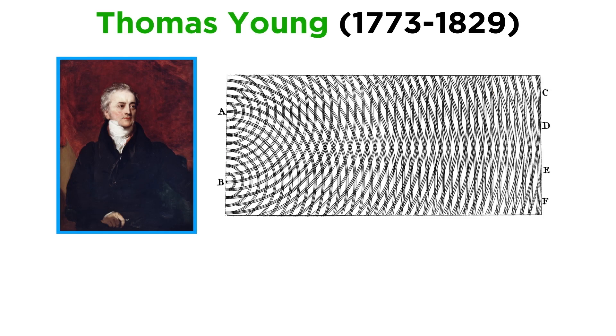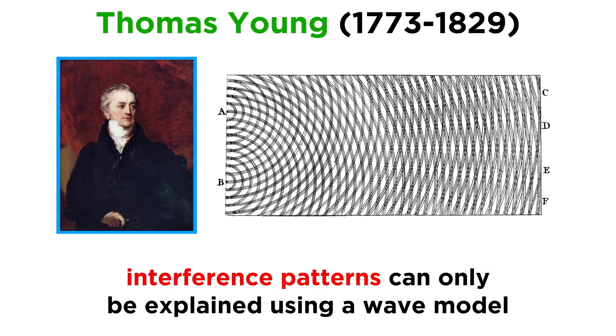In the 19th century, Thomas Young showed that light traveling through narrow slits produces interference patterns that also could not be explained by the particle model, but instead made perfect sense in terms of waves.